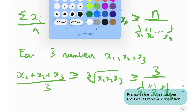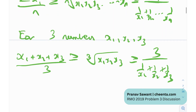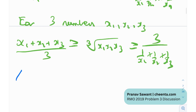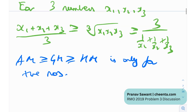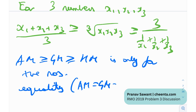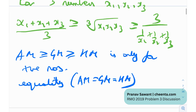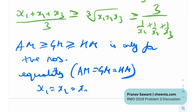There are a couple of important things to note: this inequality is only applicable for positive numbers — it cannot be applied to negative numbers. The second thing is the equality case: AM = GM = HM happens when all the terms are equal, i.e., x1 = x2 = x3. This is called the equality case.